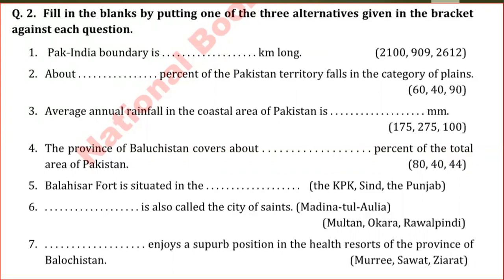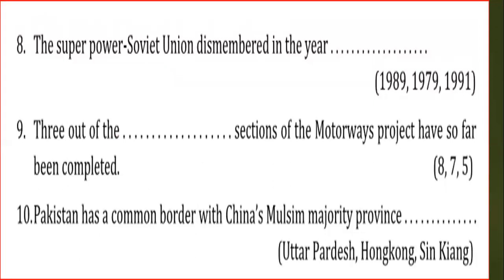Balochistan Course is situated in KPK province. That is also called the city of saints, Madinatul Ulya. Multan is also called the city of saints, Madinatul Ulya. Quetta enjoys a superb position in the healthy plateau of the province of Balochistan. The superpower Soviet Union dismembered in the year 1989. Three sections of the motorway project have so far been completely completed. Pakistan has a common border with China's Muslim majority province, Xinjiang.